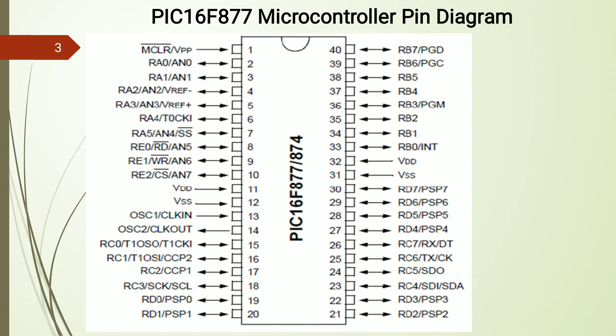From pin number 2, Port A begins, indicated as RA0 up to RA5 — that is 6 I/O pins nominated as RA0, RA1, RA2, RA3, RA4, and RA5. Additional pin functions are also assigned: AN0, AN1, AN2, AN3, and AN4 for analog inputs, excluding RA4 which does not have an analog input function. So 5 pins of Port A serve as analog inputs.